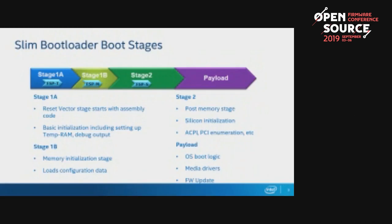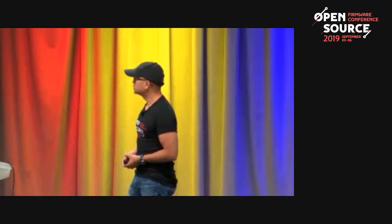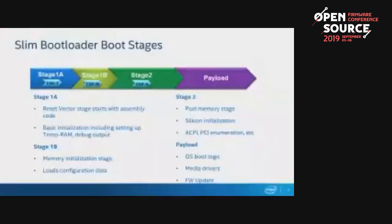In stage 1b, code is written in C and performs the rest of silicon and platform initialization — most importantly, memory initialization. This is where we get DRAM init, usually in the form of FSPM, and we have platform hooks to call into FSPM. This stage also loads the configuration data. Stage 2 is where memory is set up and ready to go — we perform the rest of silicon init like FSPS, set up tables like SMBIOS and ACPI, and perform PCI enumeration.